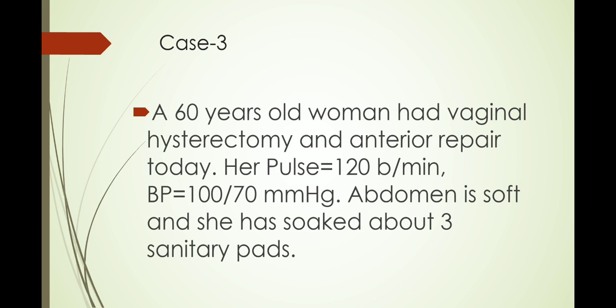Case number three: a 60-year-old woman had a vaginal hysterectomy and anterior repair today. Now her pulse is 120 beats per minute — an alarming sign, pulse more than 100. BP is on the lower side at 100/70, and abdomen is soft. But when you check the pad, she has soaked about three sanitary pads, although she had a vaginal hysterectomy.